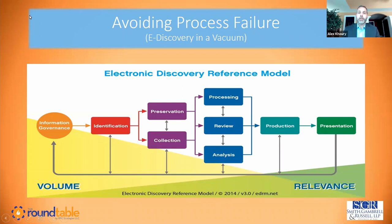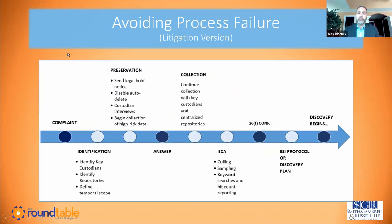When we talk about process failure, this is the EDRM model for eDiscovery workflow. It's pretty standard — generally accepted as the workflow. ECA falls in that processing and analysis box in the middle. We say 'early case assessment' but in the EDRM model, ECA usually falls in sort of the middle of that workflow. I find it more helpful to superimpose some of the EDRM stages onto a true litigation timeline.